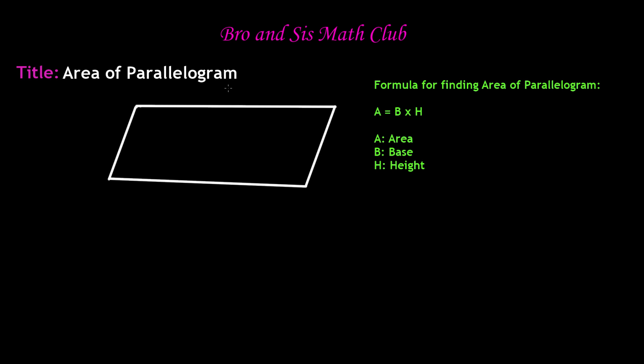First let's go ahead and label these four sides so that we can see which ones are parallel. Let's say that this is side A, side B, side C, and side D. Notice that side A and side B are parallel to each other and side C and side D are parallel to each other.